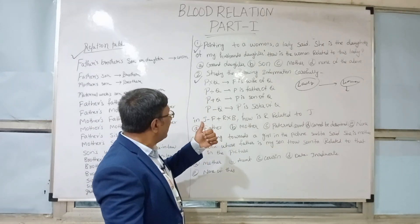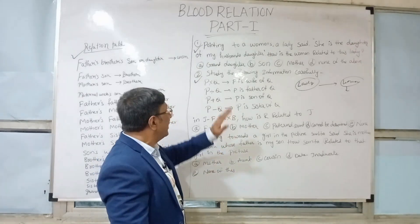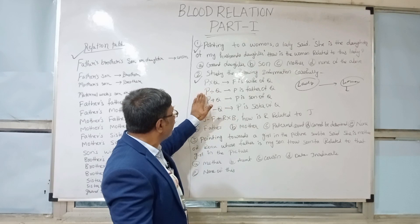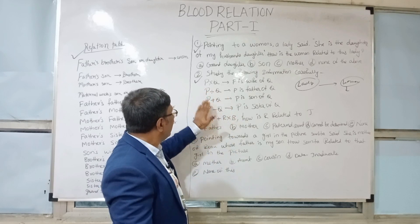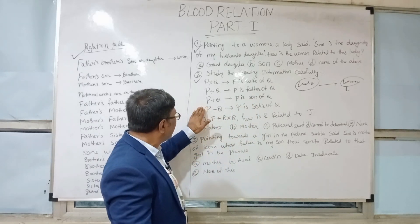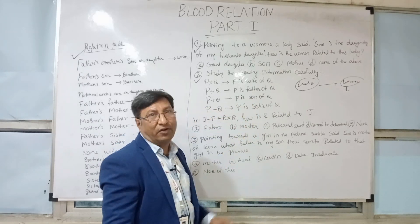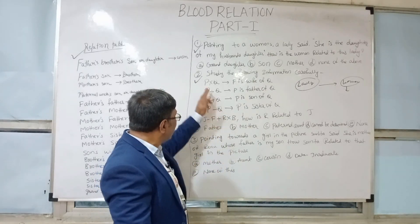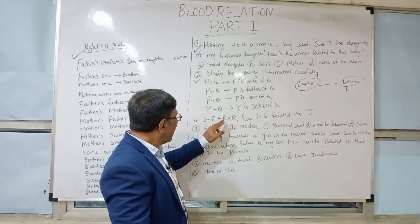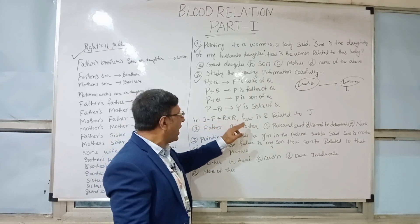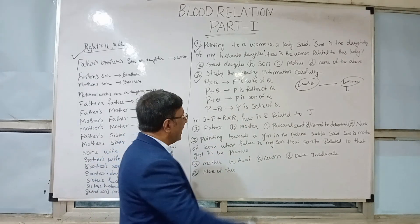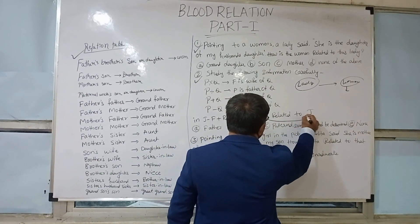Using this information, the question is: J − F + R × B. How is R related to J? We need to find the relation between R and J. So first, J − F: J is the sister of F. Then F + R: F is the son of R. Then R × B: R is the wife of B.